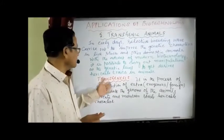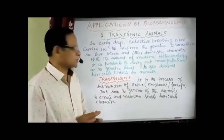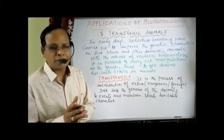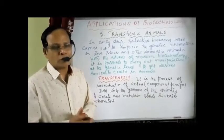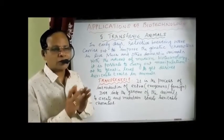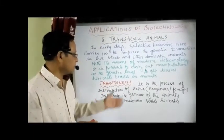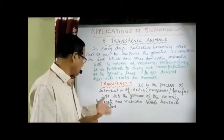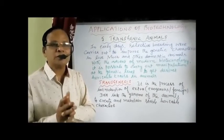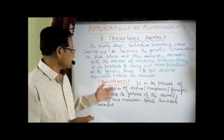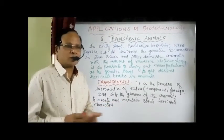For that, we have to go for transgenesis. It is nothing but the process of introduction of a desired DNA — what is called extra DNA, the DNA other than the animal body — the foreign DNA, or exogenous DNA, into the genome of the animals, to create and maintain stable genetic characteristics. That process is called transgenesis. The animals are called transgenic animals, and the gene in that is called transgene.